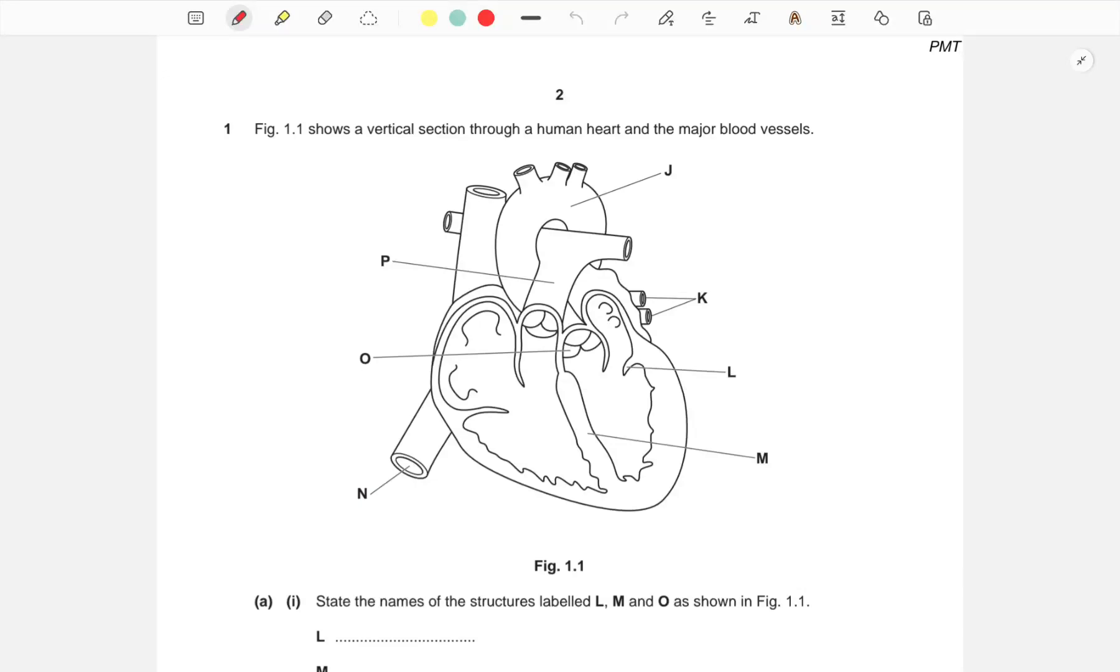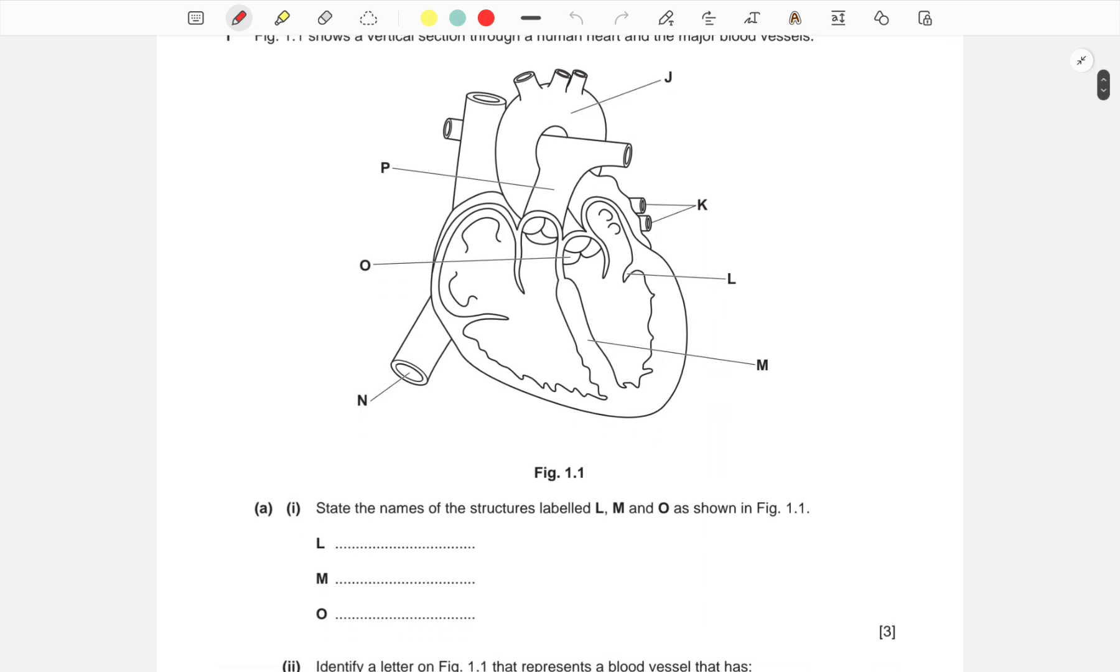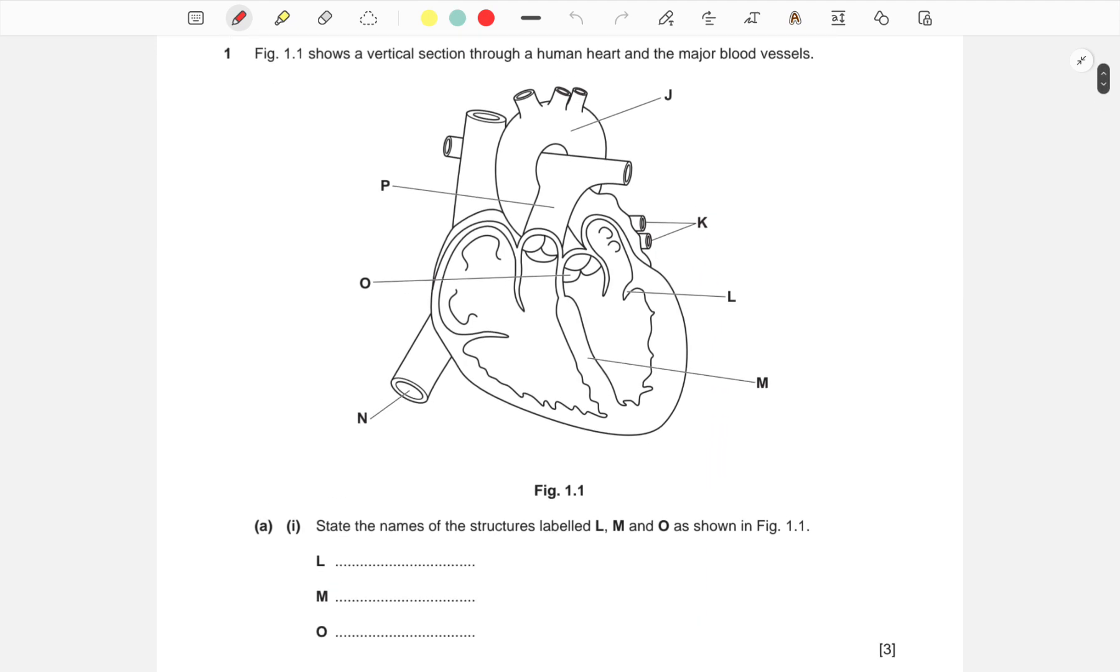This question is about the human heart and major blood vessels. First, we have to identify structures L, M, and O. L is pointing at the valve between the left atrium and the left ventricle, which is also called the atrioventricular valve.